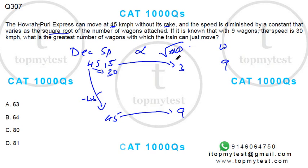So, square root of wagon should be 9, which means wagon should be 81. Now, if I attach 81, it is not going to move.